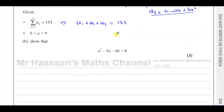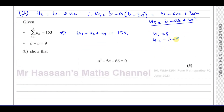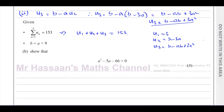We know U1 equals 3, U2 equals B minus 3A, and U3 equals B minus AB plus 3A squared. Adding these three terms together and setting them equal to 153, we get: 3 plus (B minus 3A) plus (B minus AB plus 3A squared) equals 153.